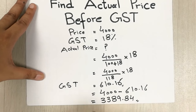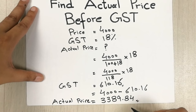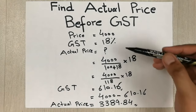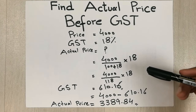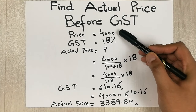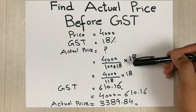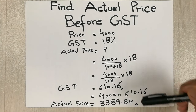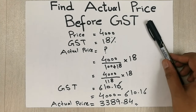So this is the actual price before GST, which is 3389.84. Please remember: some people make a mistake — they first find out what 18 percent of 4000 is and then minus it, which is a wrong method. You have to do this calculation using this method to find the actual price. Please like my video and subscribe to my channel, thank you very much.